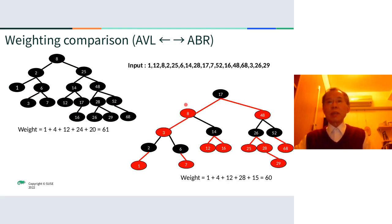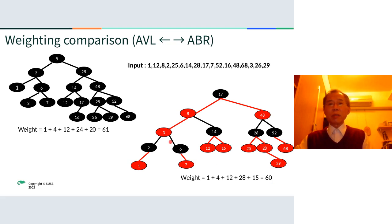Let's also compare the ABR with AVL. AVL has a better balance, so its weighting is 61. But for the ABR, we also got 60. The difference is very small — just one. But don't forget that AVL must check the balance factor constantly, whereas for ABR we just change the color sometimes.